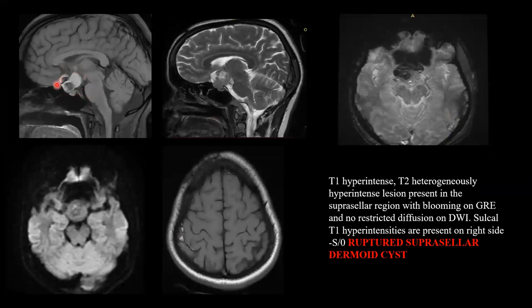T1 hyperintense lesion in the suprasellar region, which is heterogeneously hyperintense on T2, showing blooming on GRE and no restricted diffusion. A few T1 hyperintense foci are seen in the sulcal spaces in the right frontoparietal region. This is a case of ruptured suprasellar dermoid cyst.